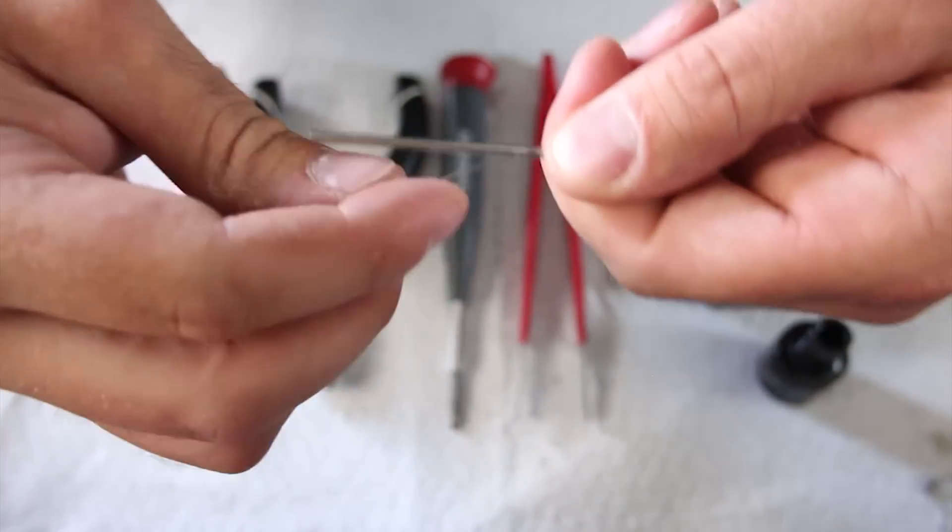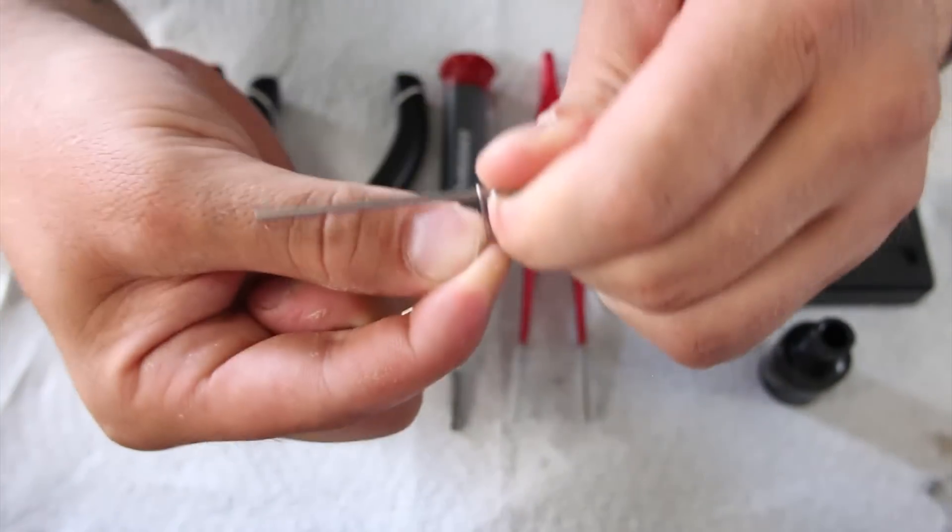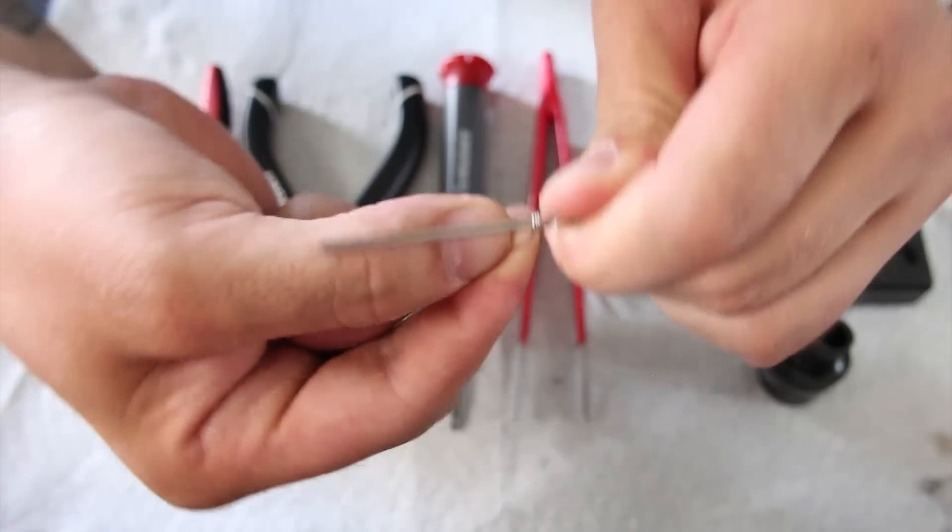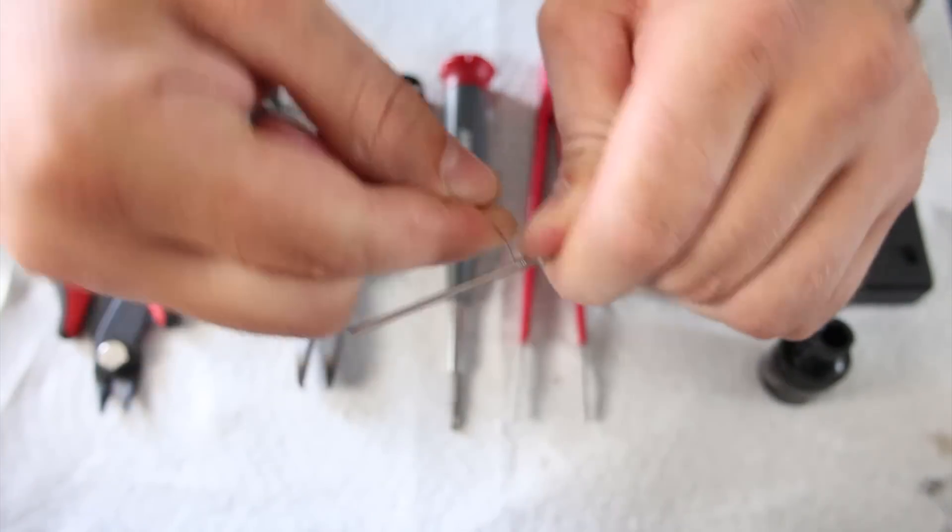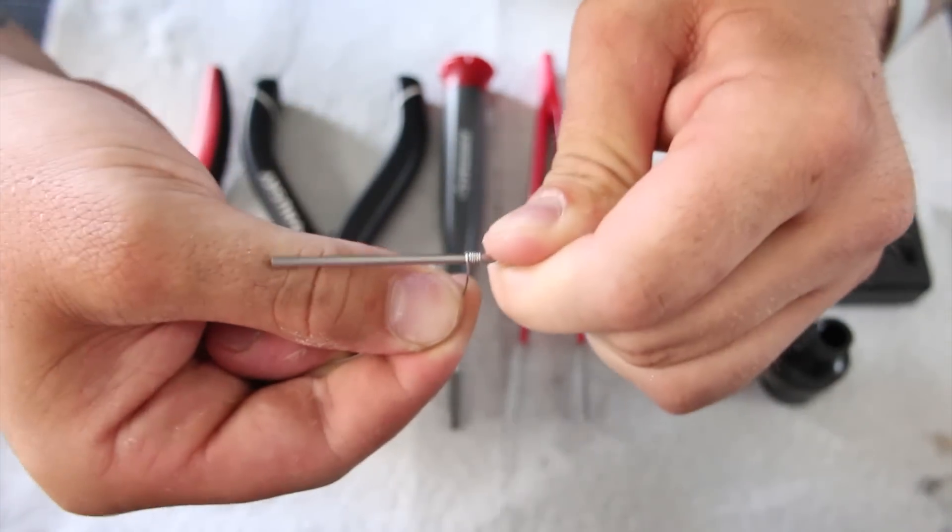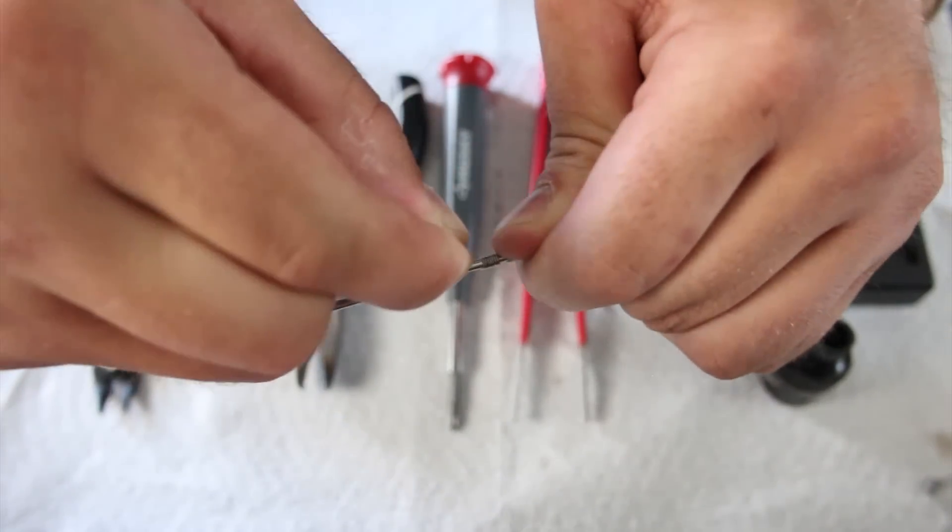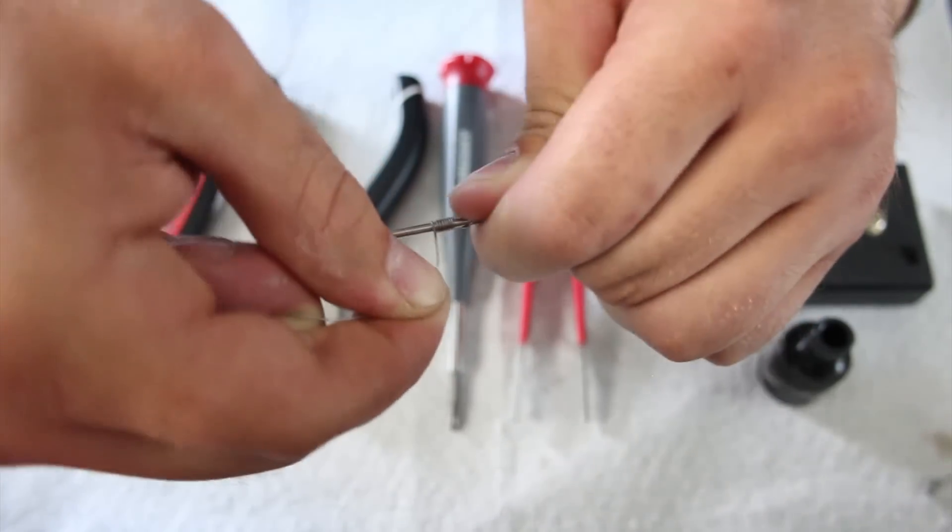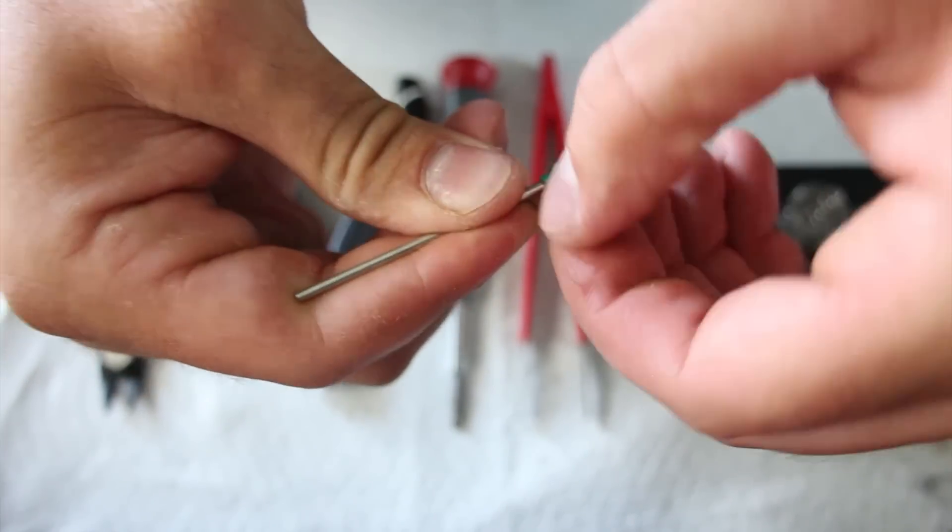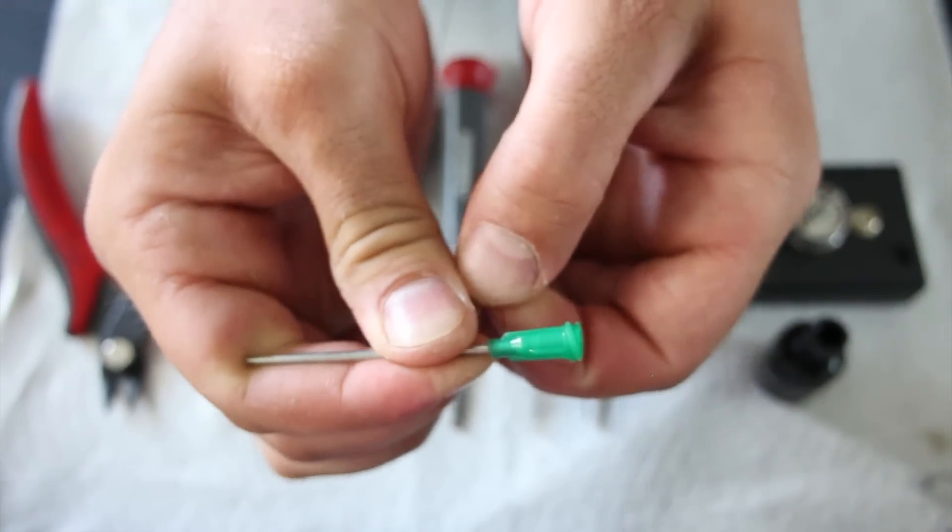So let's get started. First thing you want to do is take your regular syringe needle here and wrap a standard micro coil. Today we're going to be doing eight wraps.